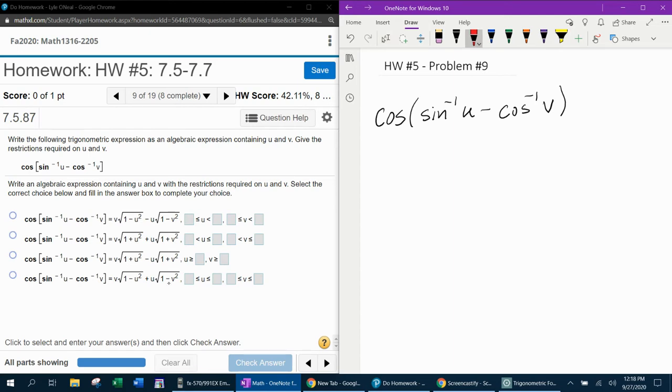So to start with, we know that an inverse trig function produces an angle. So we could say that inverse sine of u is some angle, say alpha, and the inverse cosine of v would be a different angle, say beta.